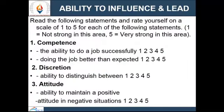Ability to influence and lead. Read the following statements and rate yourself on a scale of 1 to 5 for each, where 1 means not strong in this area and 5 means very strong. First, competence — the ability to do a job successfully. Second, doing the job better than expected. Third, discretion — ability to distinguish between attitudes and ability to maintain a positive attitude in negative situations.